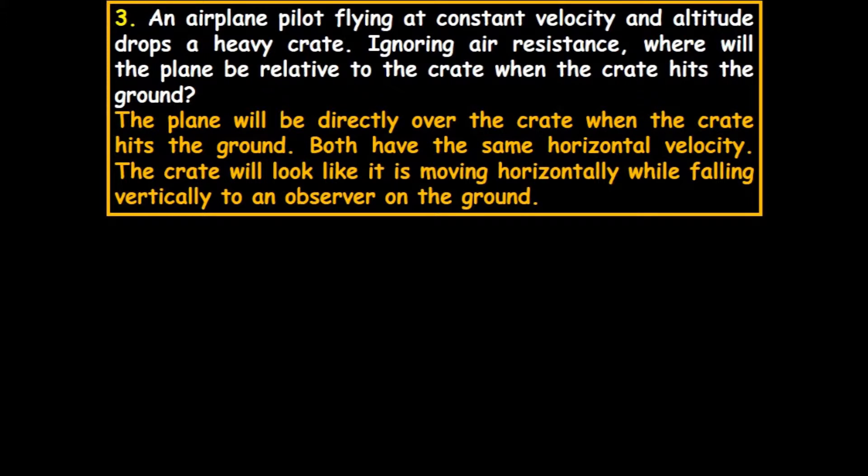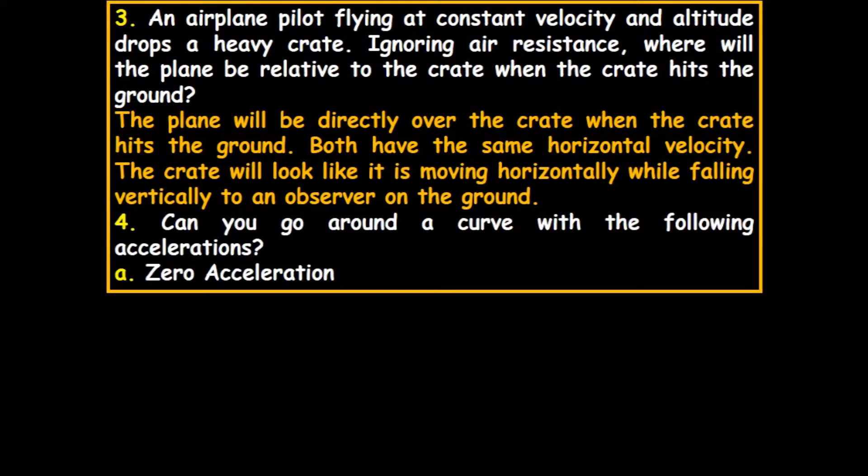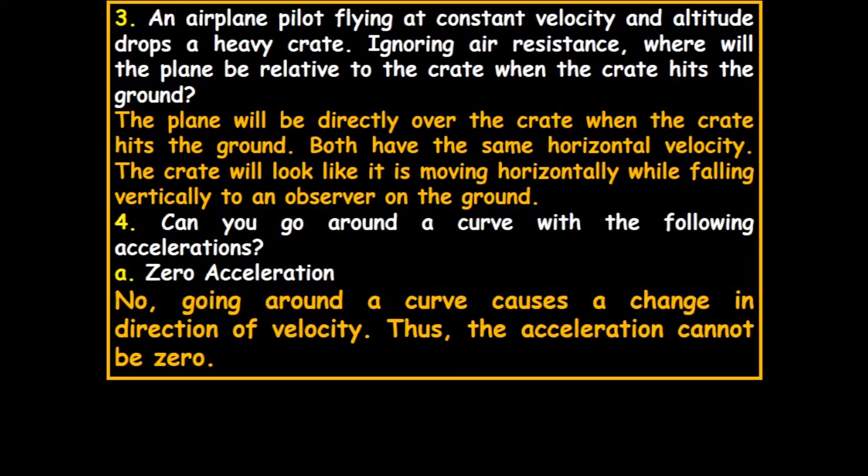Can you go around a curve with zero acceleration? No. Your speed is constant, but your direction changes. Remember, change in velocity is change in magnitude or direction or both. Going around a curve causes a change in direction of velocity. Thus, the acceleration cannot be zero.